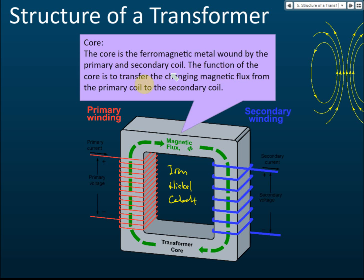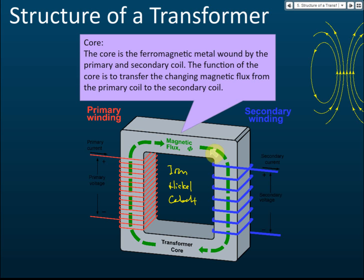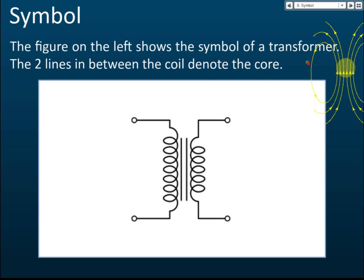The core is the ferromagnetic metal wound by the primary and secondary coils. The function of the core is to transfer the changing magnetic flux. As shown by the arrow, the core transfers the magnetic flux from the primary coil to the secondary coil. The three parts of a transformer are the primary circuit, secondary circuit, and the core.